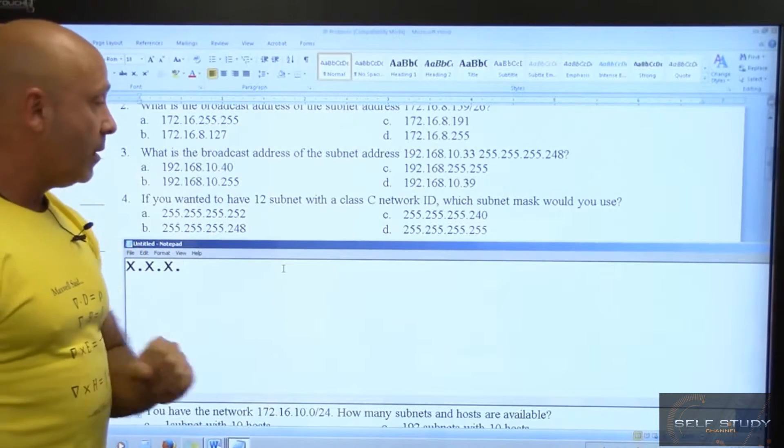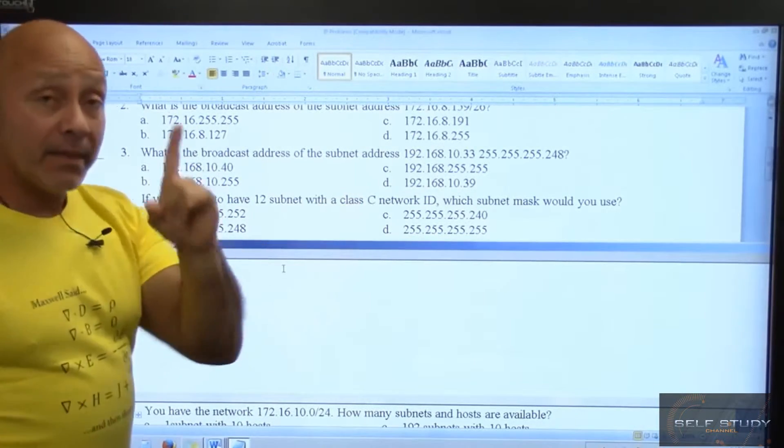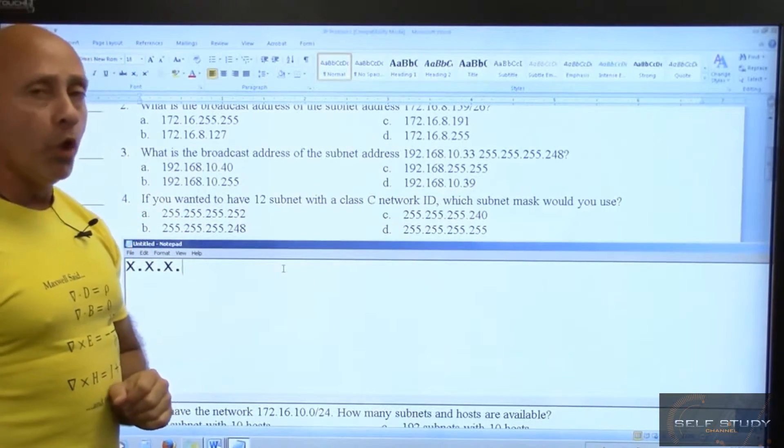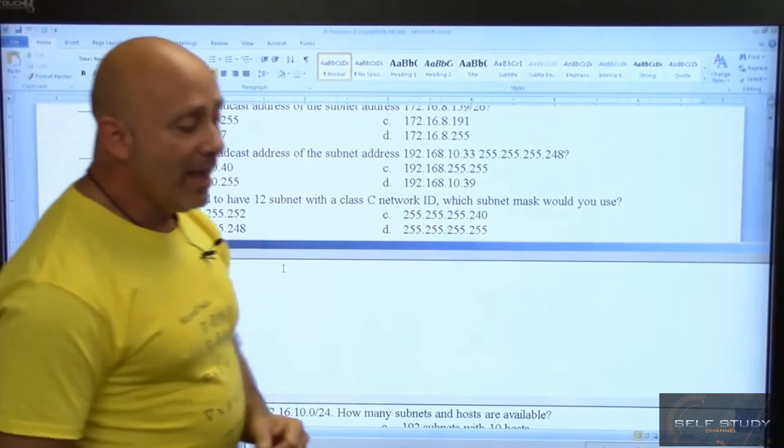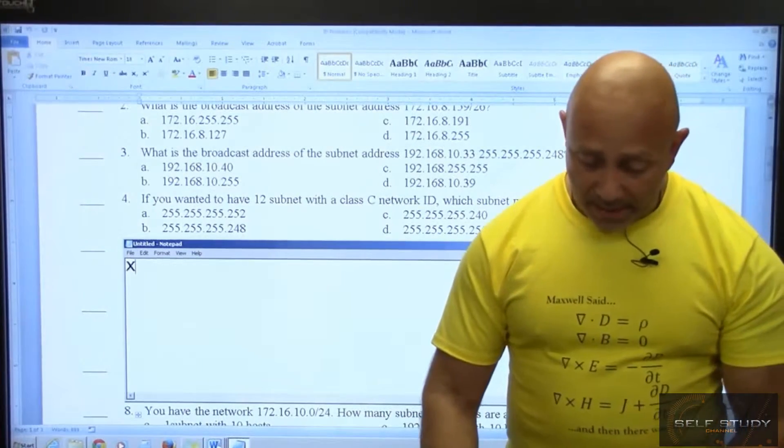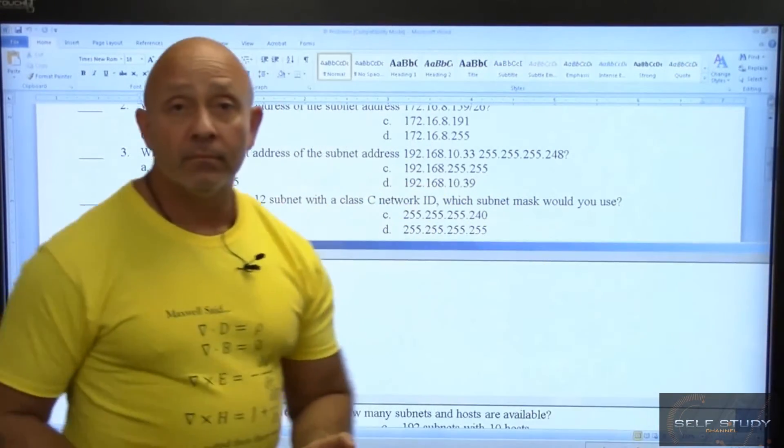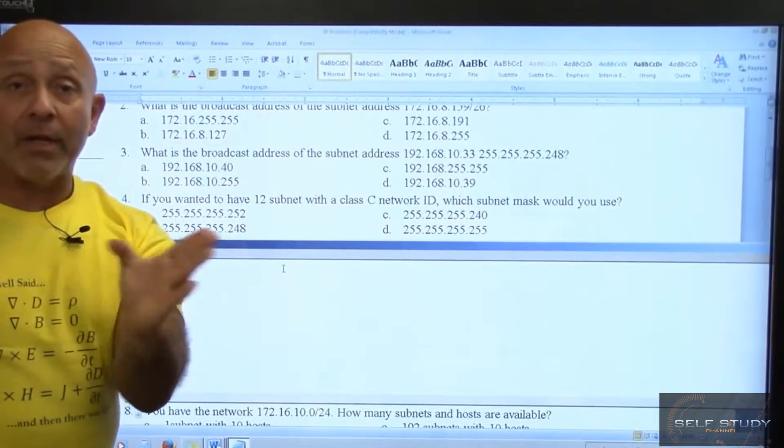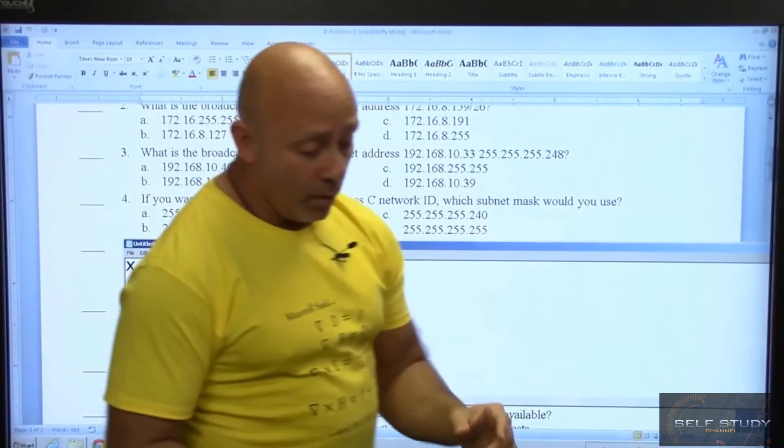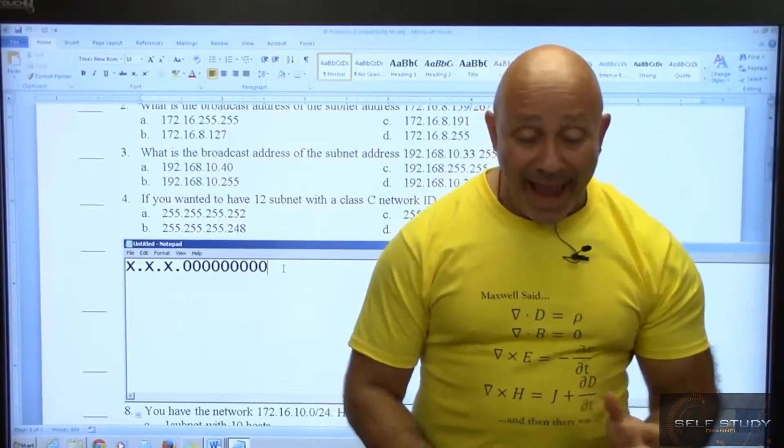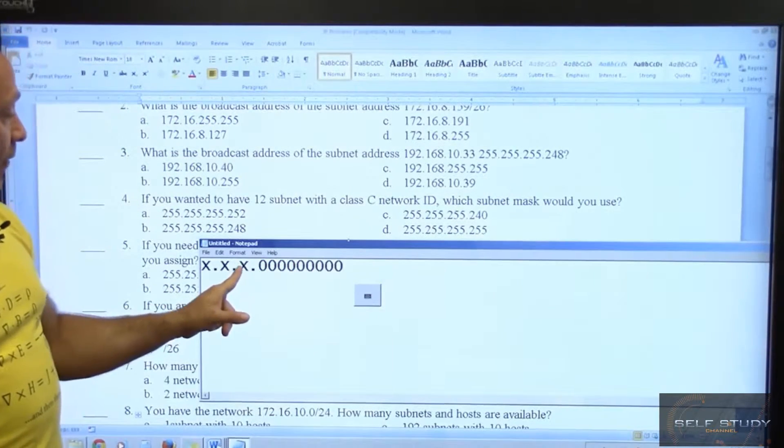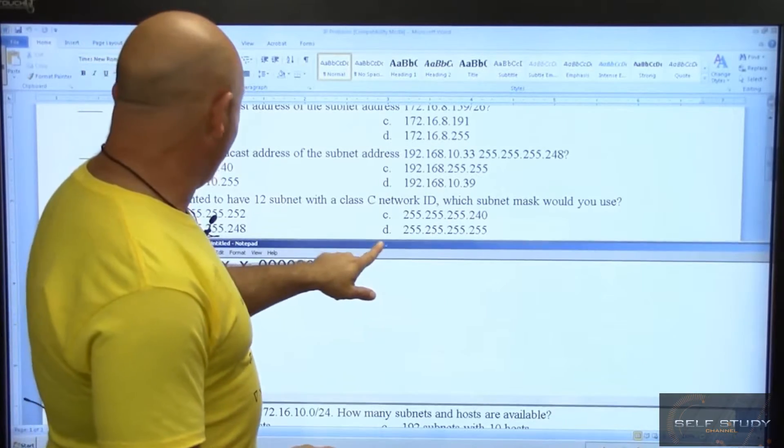Now in question number four, they don't even give you any numbers or mask - they're looking for a mask. But look at the question: if you wanted to have 12 subnets with a Class C key, Class C network ID, which subnet mask would you use? A Class C network ID, that would mean X.X.X because Class C classful boundary, that means the first three octets. So what mask would you use for 12 subnets? Well we don't know. We know we have 8 bits to work with, and when you count for subnets you're counting from left to right.